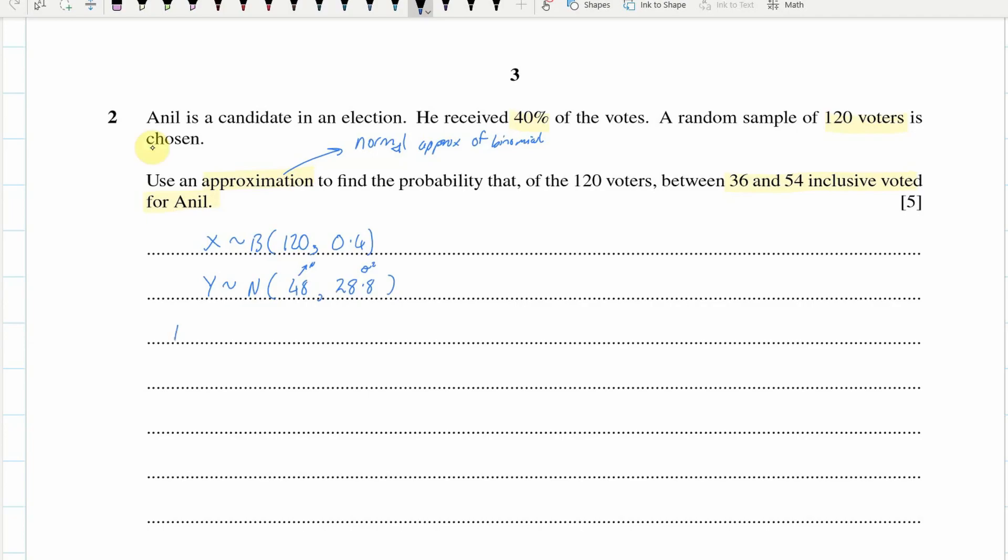Now, I'm going to do my continuity correction. When I put this into Y, this 36, with my continuity correction, becomes 35.5. Because 36, when we're moving from a discrete data set, which is binomial to continuous, we make 36 between 35.5 and 36.5. So if we want to include the 36, then we must start with 35.5. And again, here, 54 goes between 53.5 and 54.5, and we want that included, so we're going all the way up to 54.5.